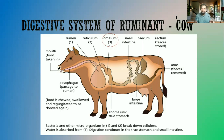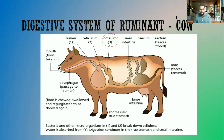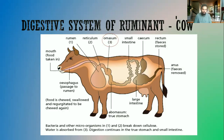The abomasum is considered the true stomach. It is in this structure that the animal starts to produce enzymes — specifically gastric juice, which contains the enzyme pepsin. Pepsin starts the digestion of proteins, breaking them down into amino acids, which are the smallest subunit. Renin is also produced in the abomasum. The remaining food then passes into the duodenum.